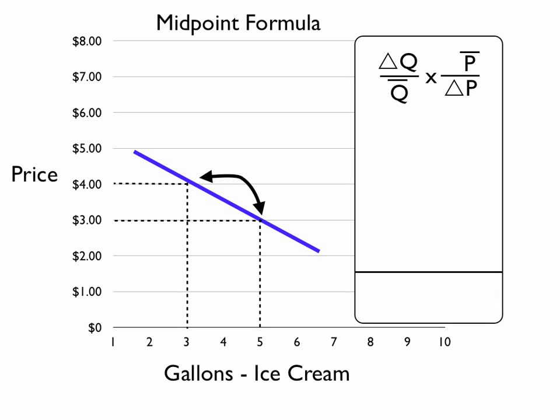Let's see if we can calculate the values. What's the change in Q? Q changed from 3 to 5 or 5 to 3, so the change was 2 units. The average Q was 4. We can either visually look at the chart and calculate that, or we can actually add 3 plus 5 as 8 divided by 2. That would also give us 4 as the average Q. So we have 2 divided by 4 for our first value in the equation.